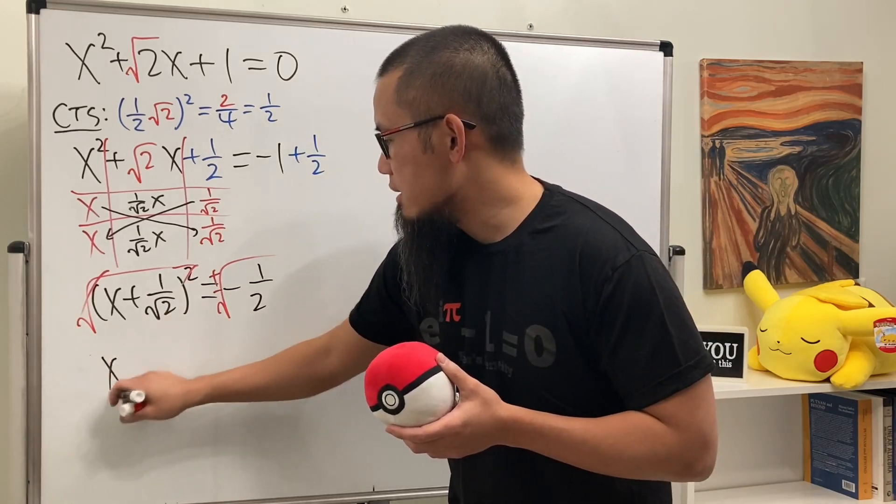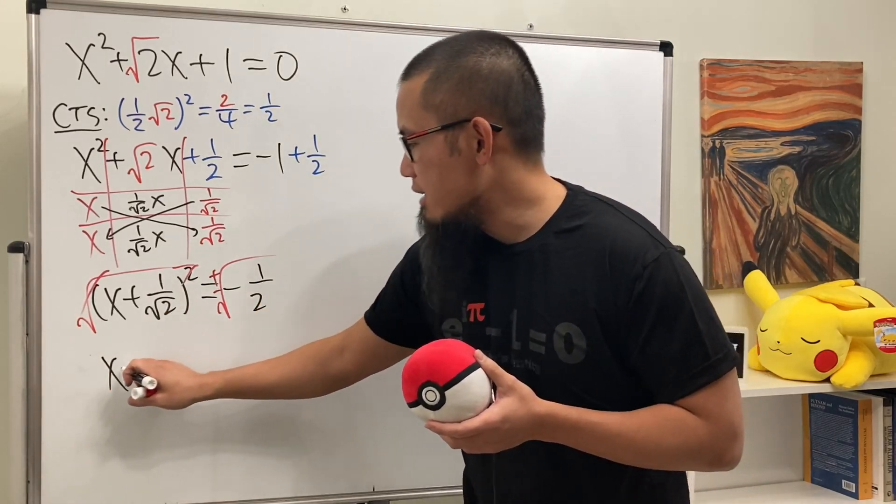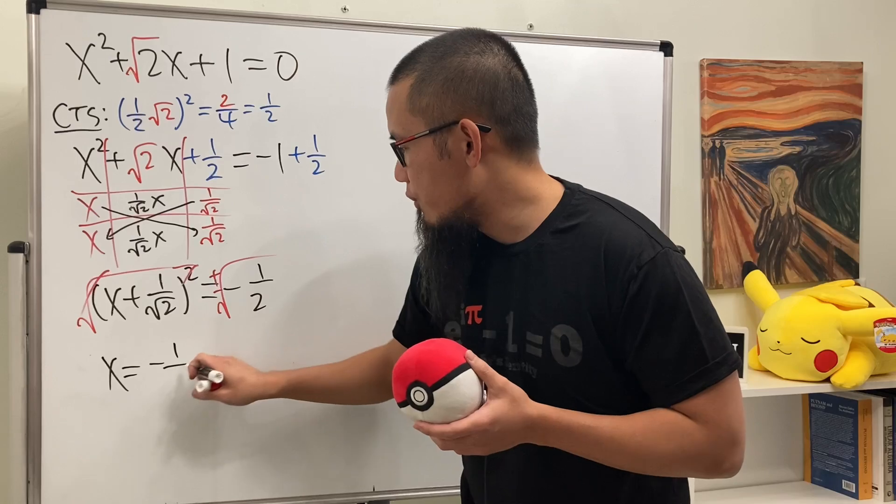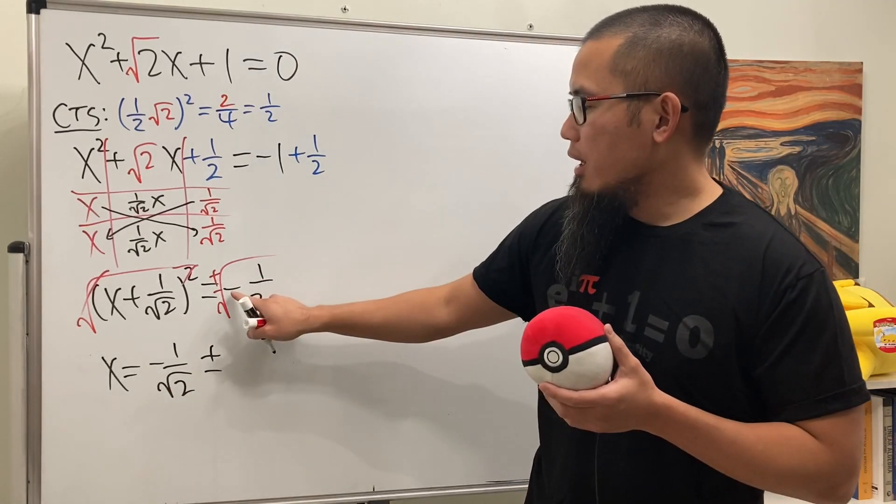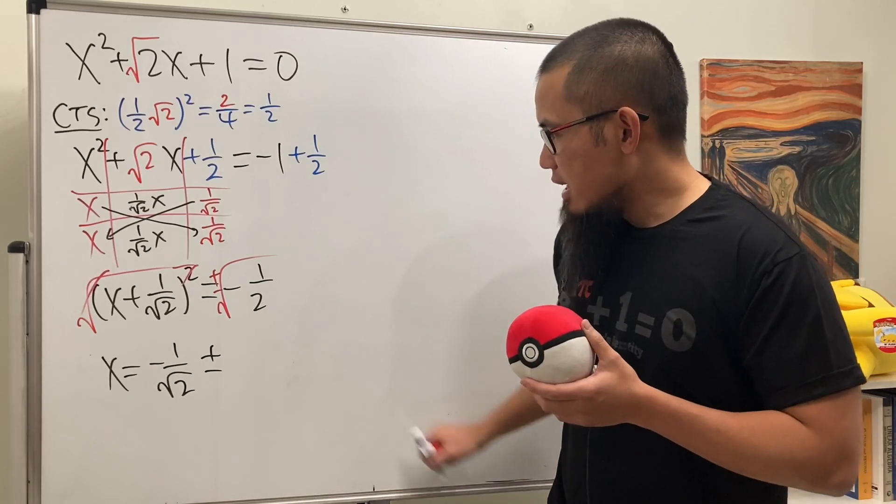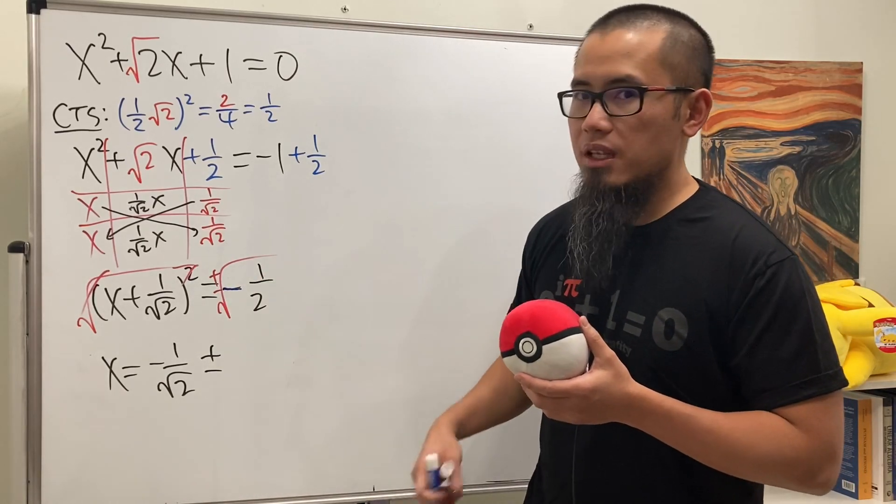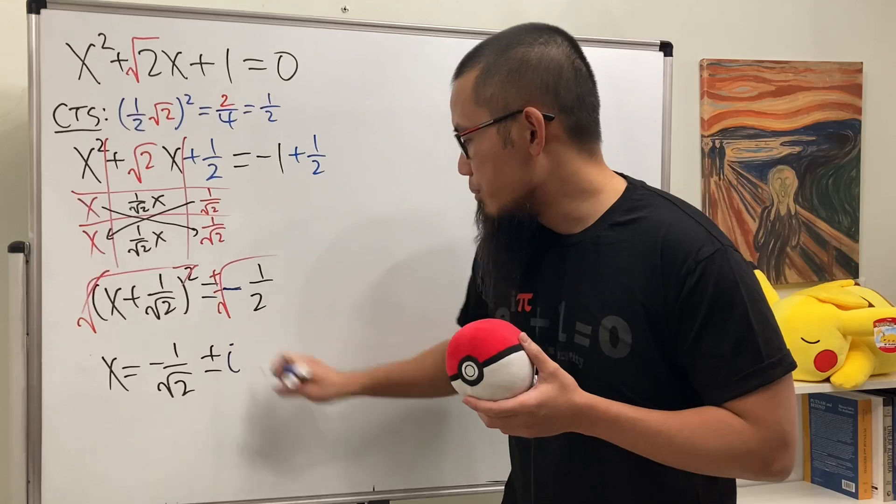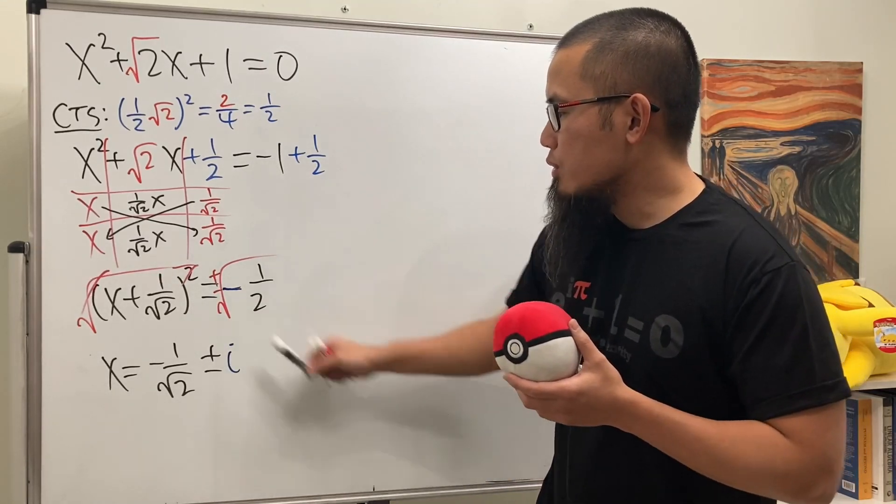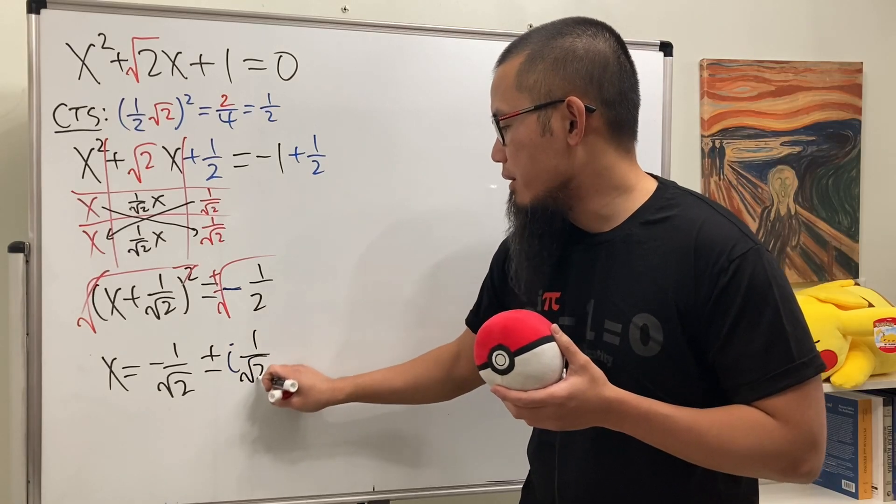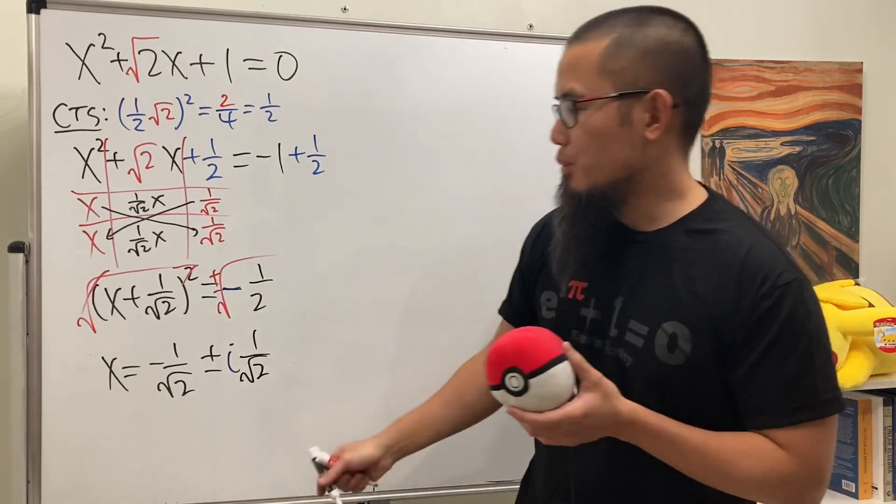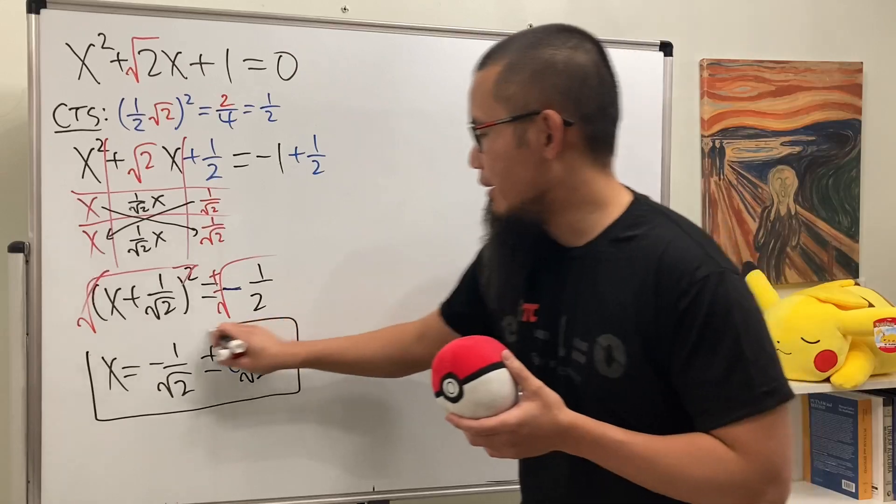So we're getting x. And let's move this to the right-hand side. So we get negative 1 over square root of 2. And then the plus or minus. The negative inside of the square root gives us the i. So let's go ahead and put it on the outside. And then when we do square root of 1, it's just 1. And then, of course, square root of 2 right here. Cool. That is what we have.